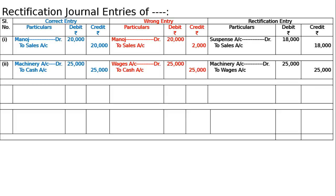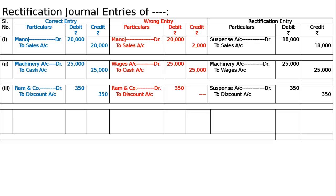The third problem: discount received from Ram has not been entered in the discount column of the cash book. When we pay somebody we receive a discount. The correct entry is Ram and Company debited to discount received account ₹350, both in debit and credit columns. The wrong entry shows Ram and Company debited ₹350 but nothing written in the discount column. Hence, write 'to discount ₹350'. Since Ram and Company account is correctly posted, suspense account is debited to discount account — being no entry made for discount received, now rectified.